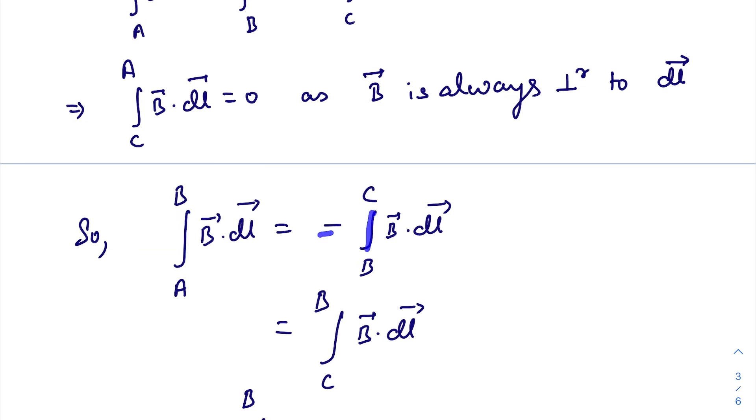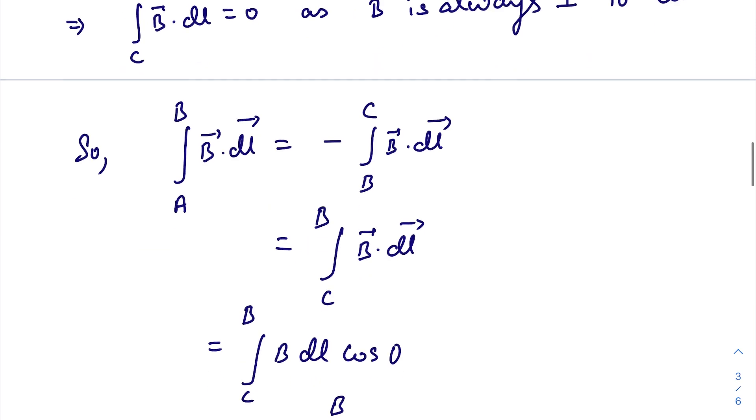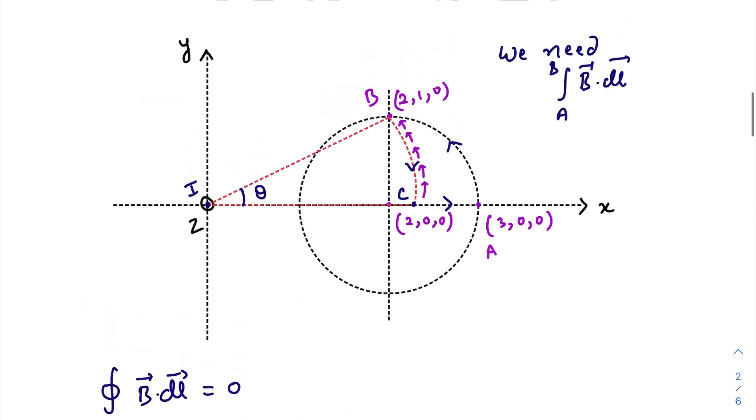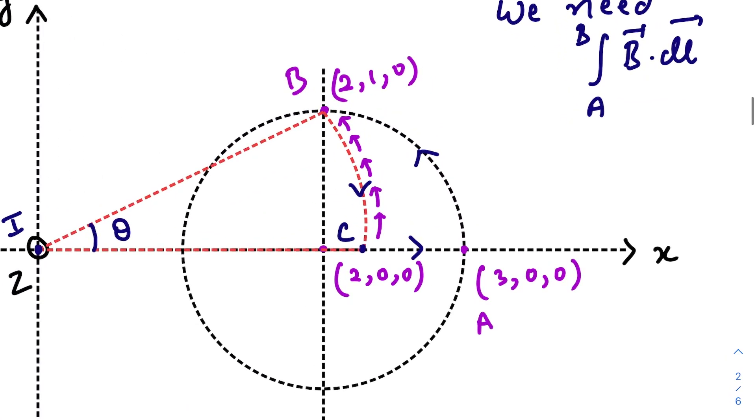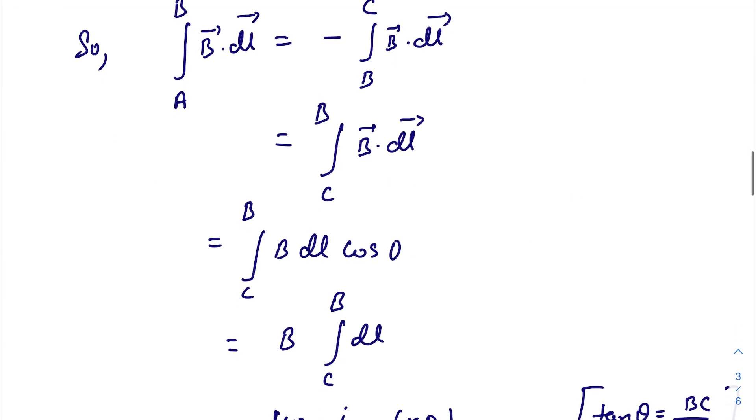Removing the negative sign, we change our path from C to B. Now if you consider the path CB, the magnetic field makes an angle of zero degrees at each and every point, keeping its magnitude constant.